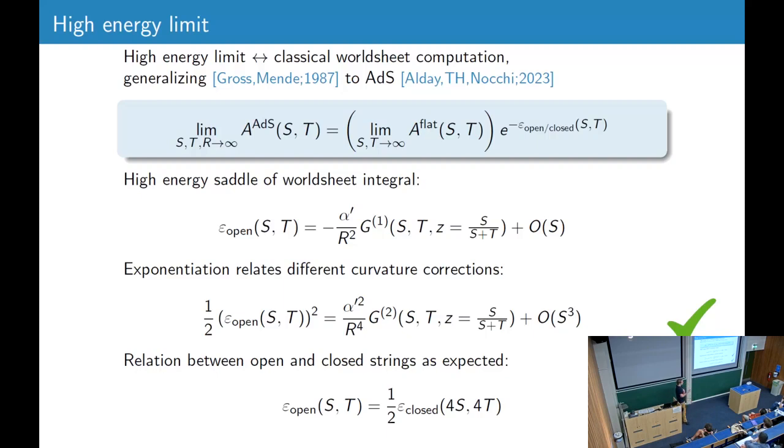This exponent can be computed by just doing the worldsheet integral by a saddle point at Z equals S over S plus T. and since this is an exponential, we now get a relation of all the curvature corrections on the saddle, and we can check that indeed the square of this first correction on the saddle agrees with the second correction. And another check is that the high-energy, this formula also works for the closed string amplitude, and the open and closed strings satisfy this relation as expected by reflection principle, which was explained by Gross and Mende.